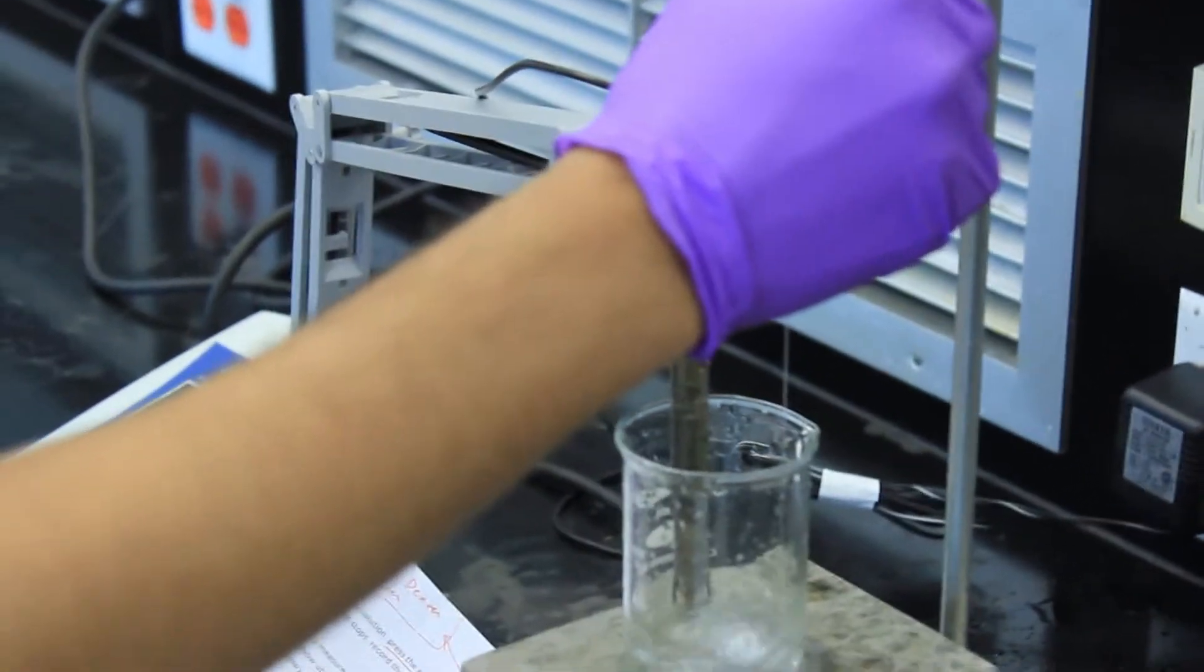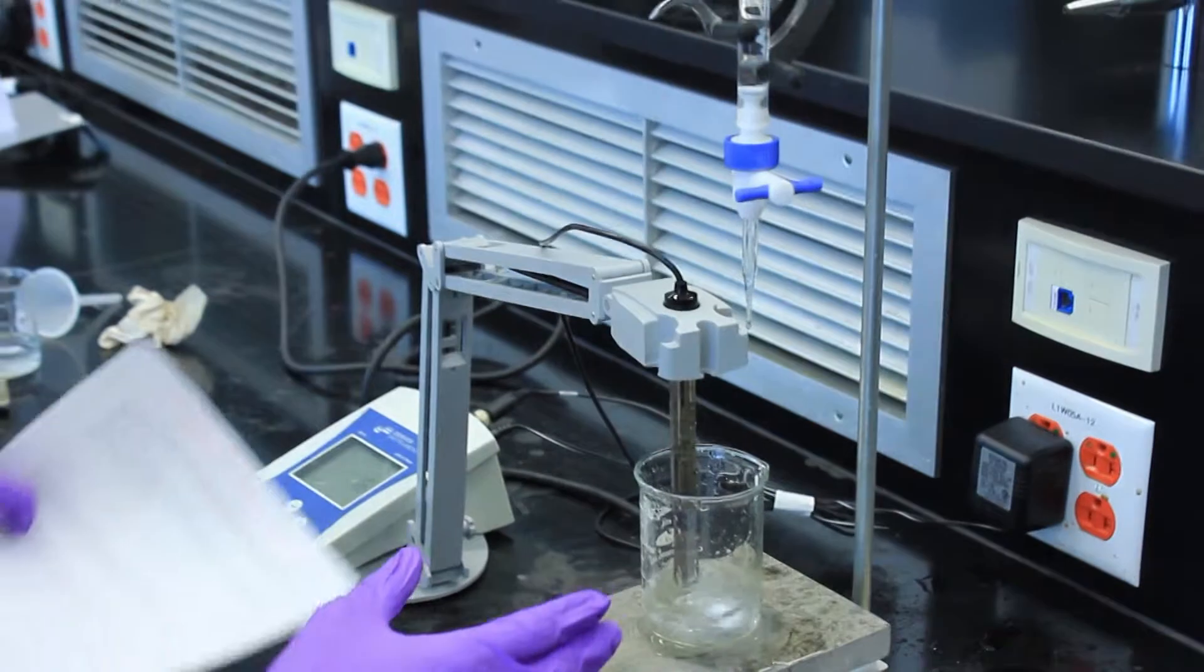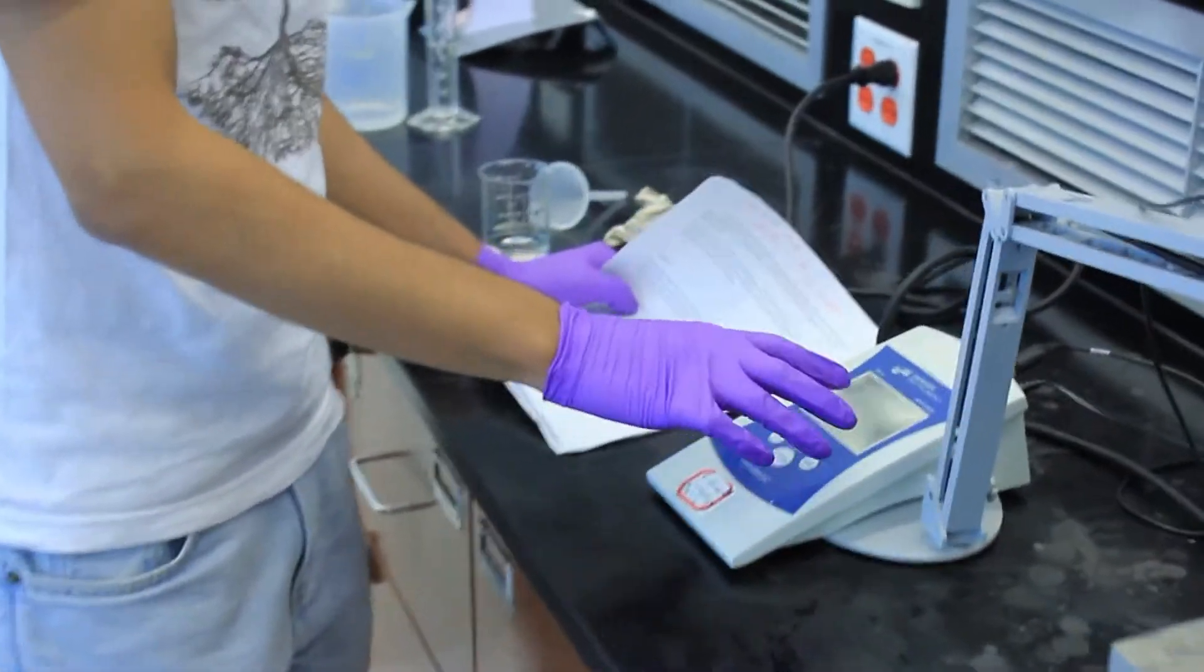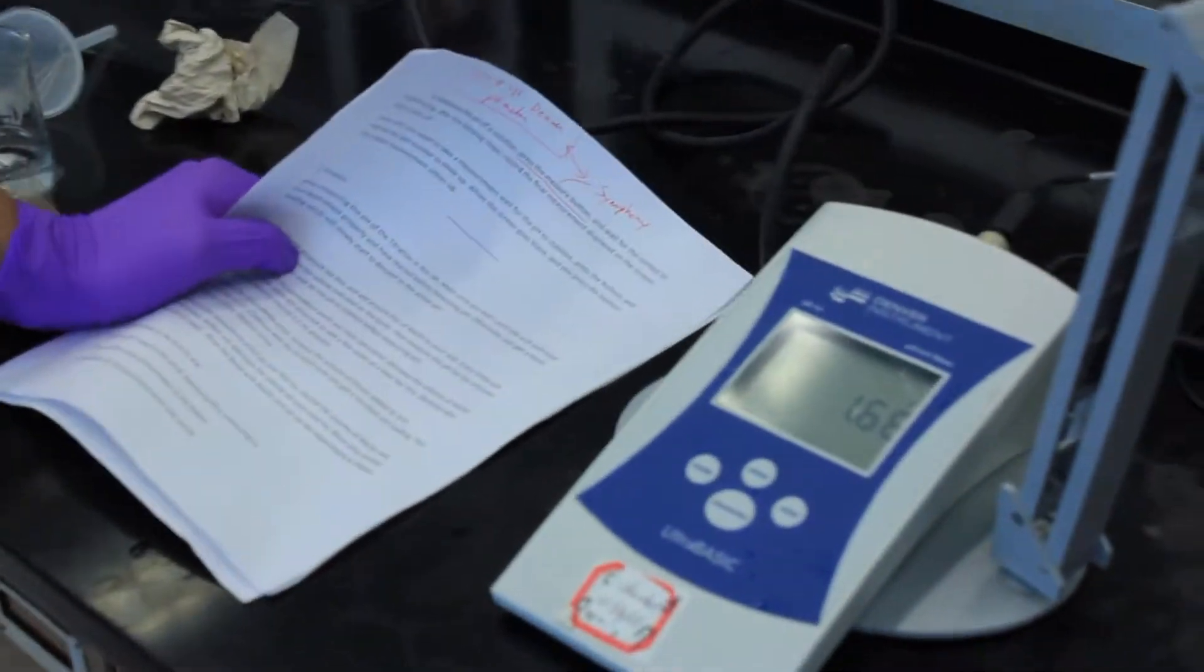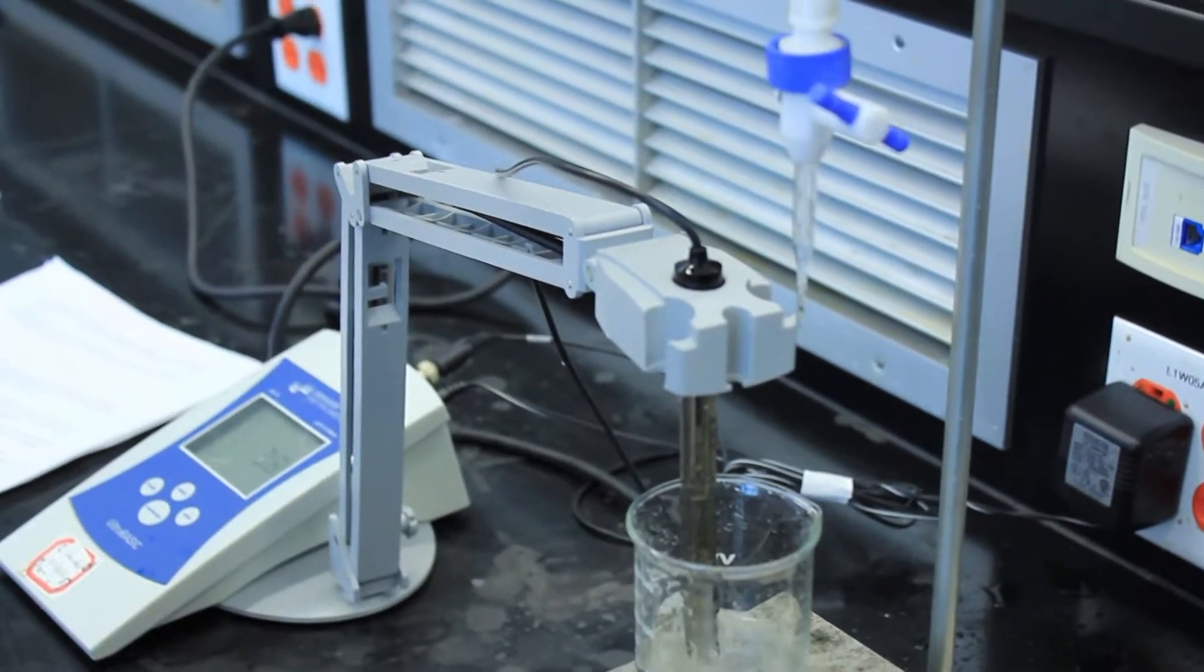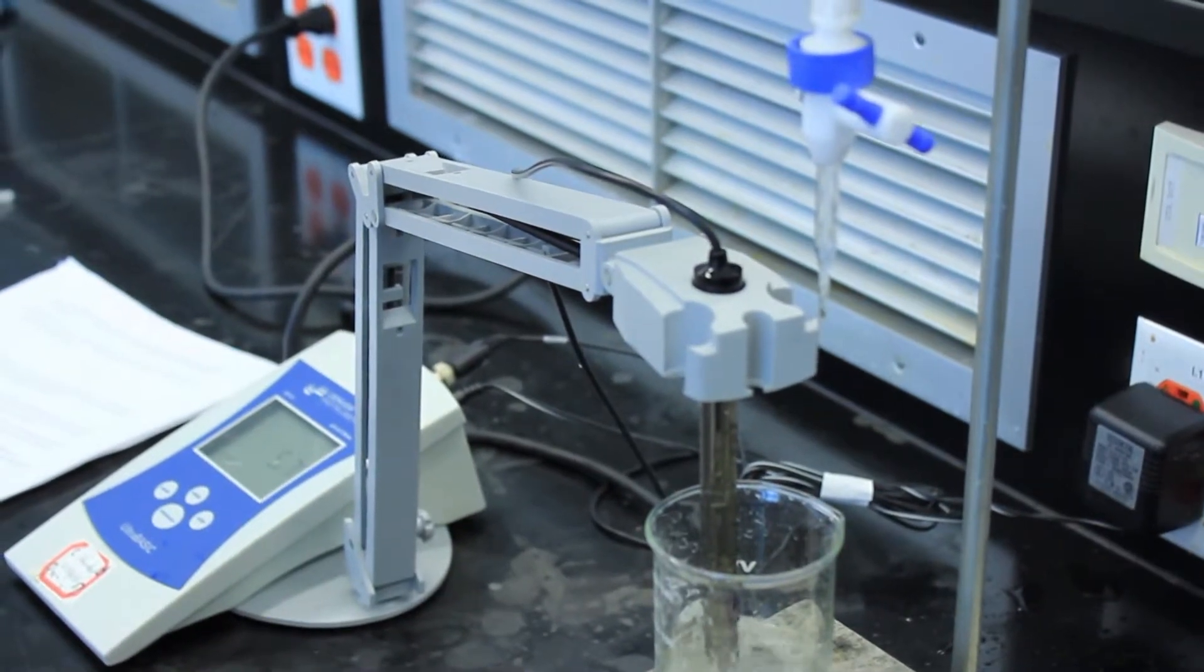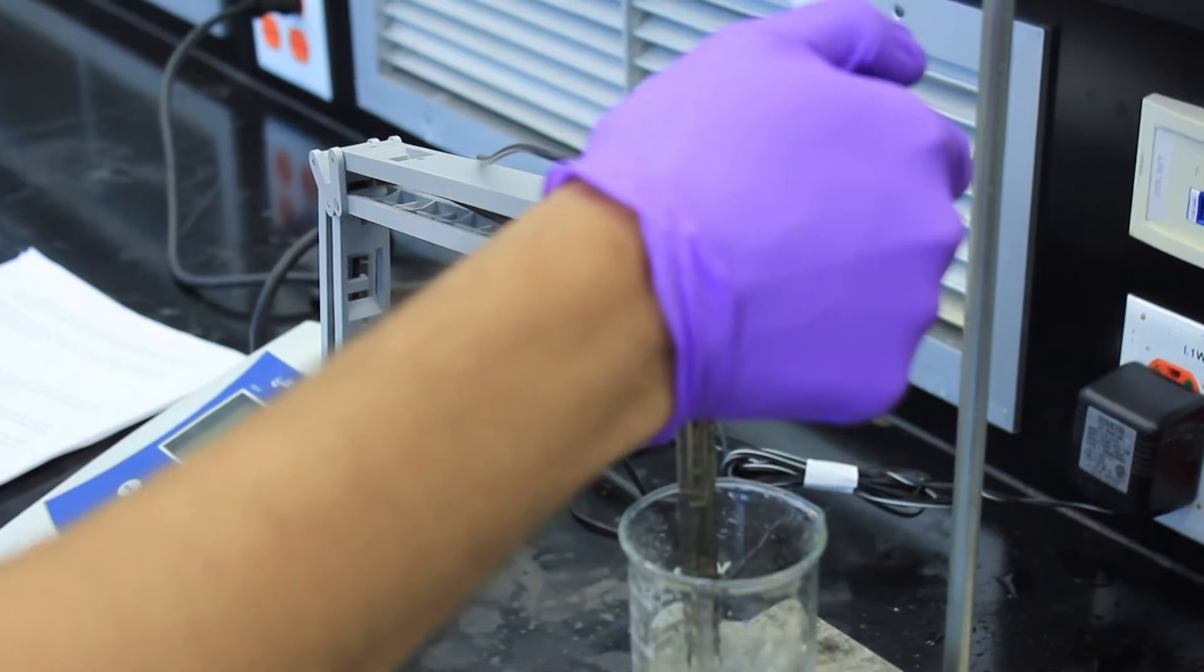Record the initial volume of the sodium hydroxide in your burette and then go ahead and start the titration. Add 2 milliliters at a time and wait for it to dissociate completely before you read your pH meter. You should have already calculated your equivalence point beforehand. Once you get close to it, in regards to your volume of sodium hydroxide, add only a few drops at a time.